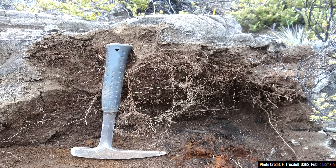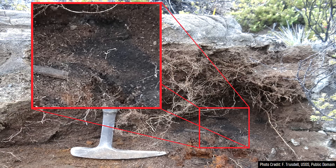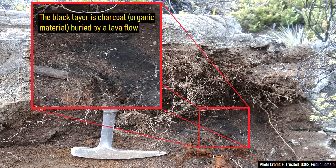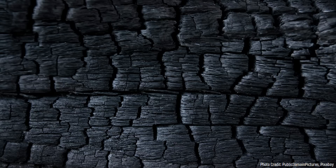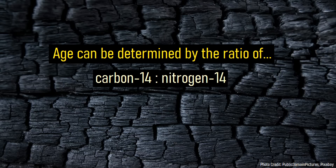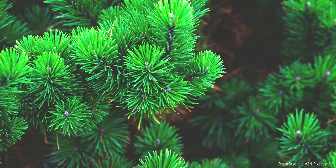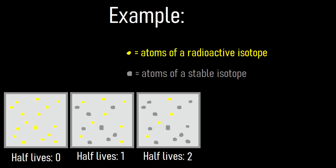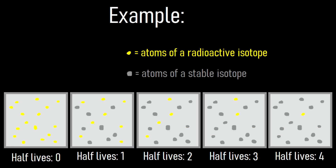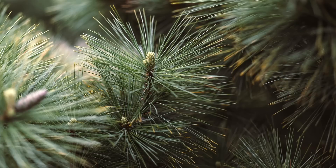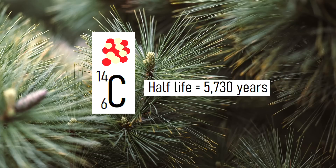In the case of the 50 BC Kilauea eruption, the advancing A'a lava flows burned and then buried a tree which is now preserved in a layer of rock. Since the wood is an organic product, we can determine its age based on the ratio of the radioactive isotope carbon-14 to the stable nitrogen-14. All living things naturally contain a small amount of carbon-14. The rate of radioactive decay of carbon-14 is measurable in a lab, which is used to determine an isotope's so-called half-life. In the case of carbon-14, its half-life is 5,730 years.